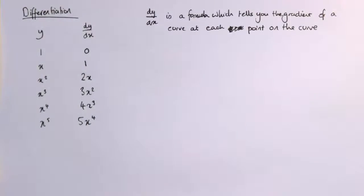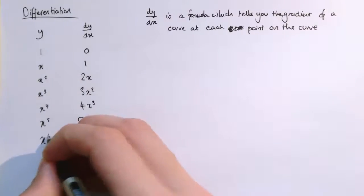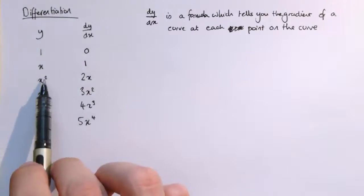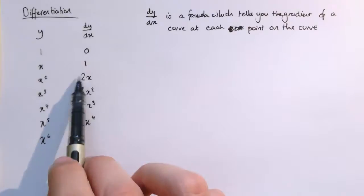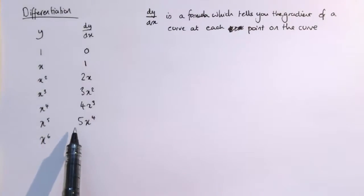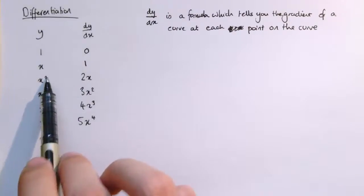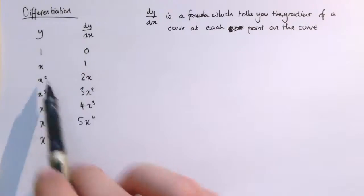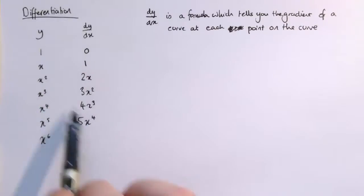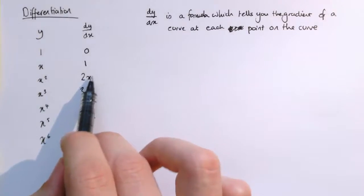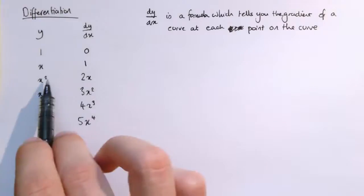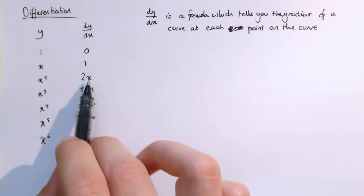And you might start to see a pattern emerging here. You can probably guess what x to the 6 would be. You can see with all of these, what's happened is I've taken the value x squared, so the index, say 2, 3, 4, 5 here. And that's ended up in front of the function. And the value 2, 3, 4, 5 there has just reduced by 1. So 3 has become 2, 4 has become 3, 5 has become 4.